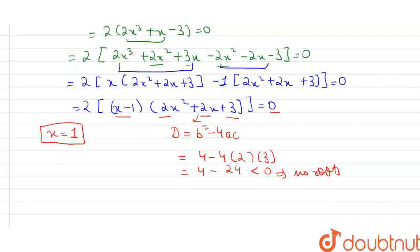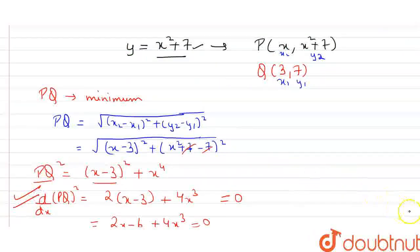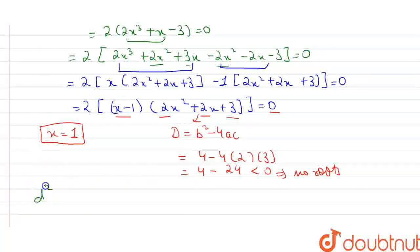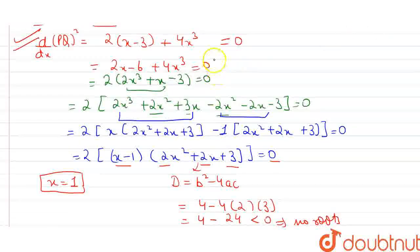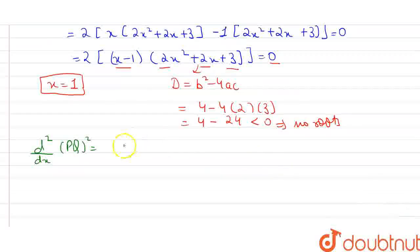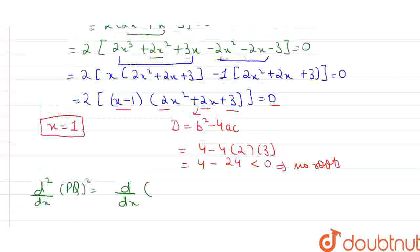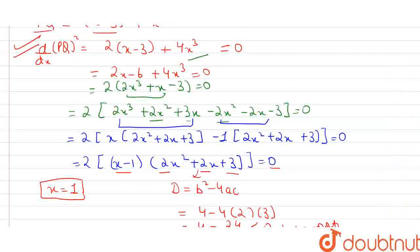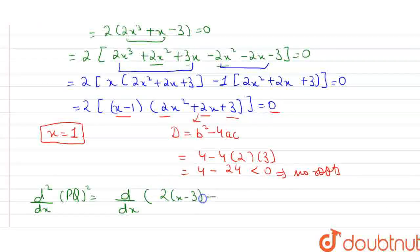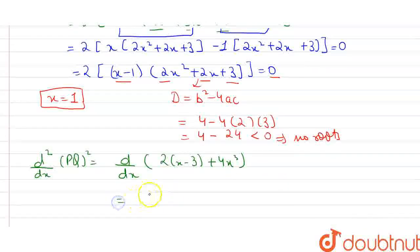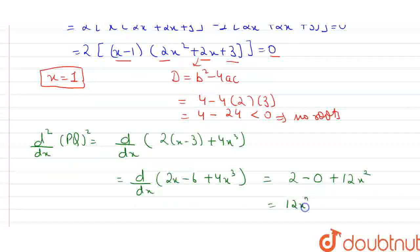So let's find out if x equals 1 is a maxima or minima. To find out if x equals 1 is a maxima or minima we have to double differentiate our equation d by dx of PQ square. So d2 by dx of PQ square, our equation was 2 into (x minus 3) plus 4x cube. Now differentiating it, first simplifying it further it is 2x minus 6 plus 4x cube. Now if we differentiate it, it is equal to 2 minus differentiation of 6 which is 0 plus 12x square. It is equal to 12x square plus 2.